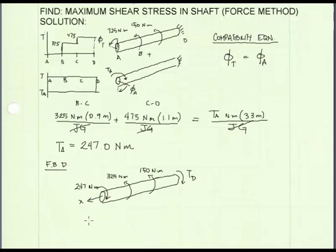Now I've drawn a free body diagram of the member, and we can use it to solve for T sub D. We will sum the torques equal to zero. We will use the right-hand rule to determine if an applied torque is positive or negative. Summing the torques equal to zero, we can solve for T sub D. It is equal to 228 newton meters.